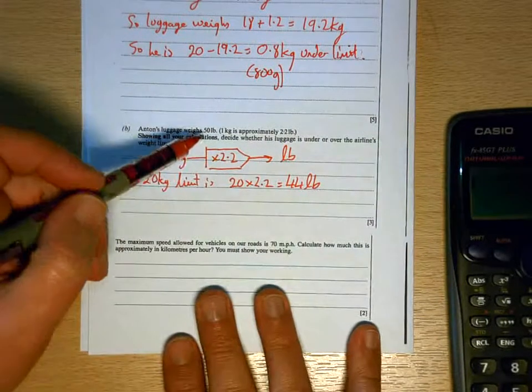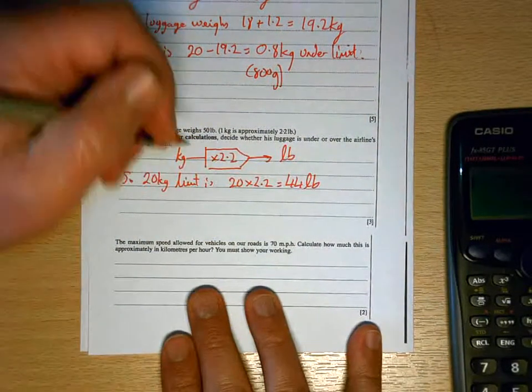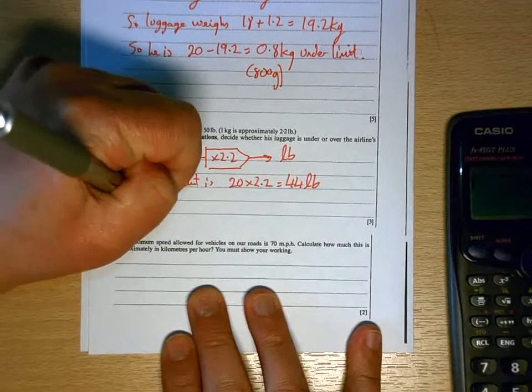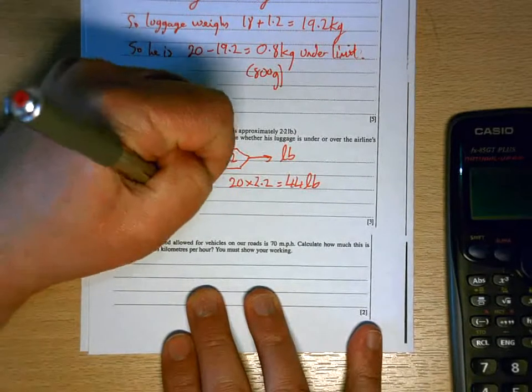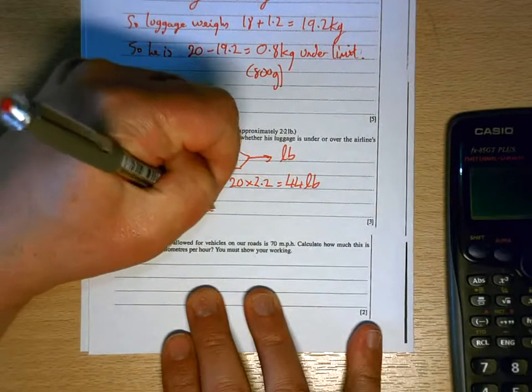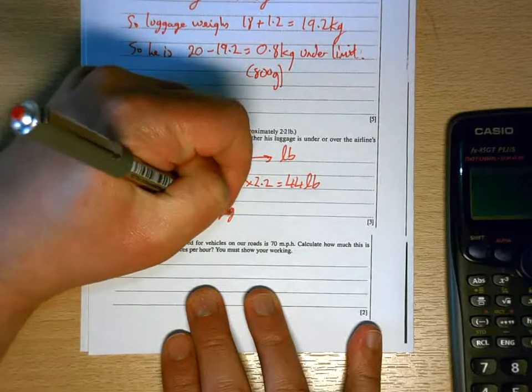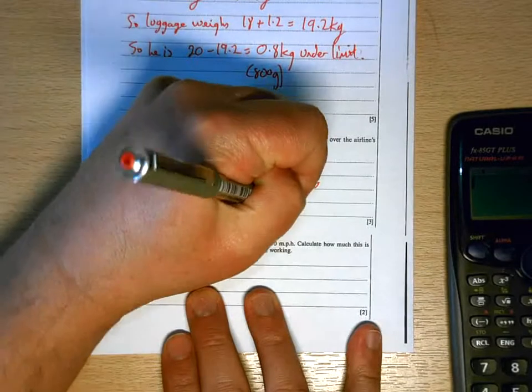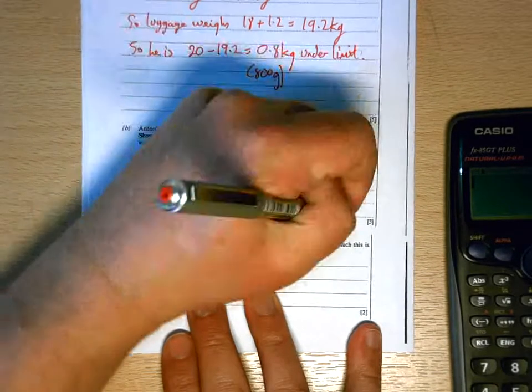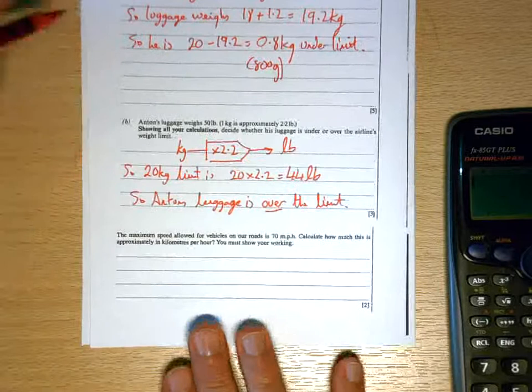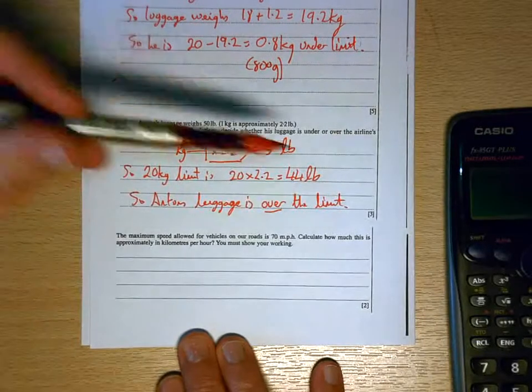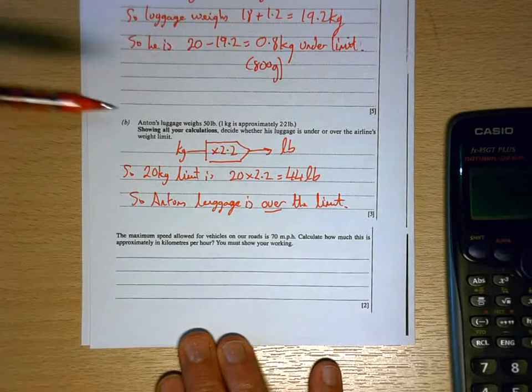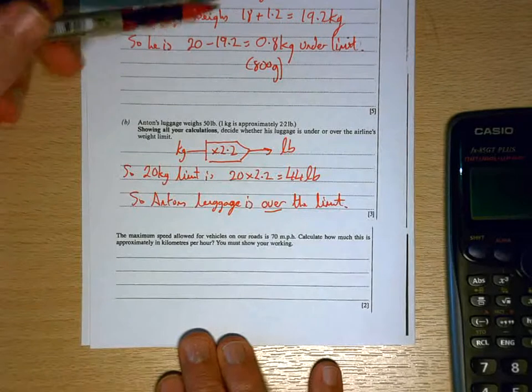So the 20 kilogram limit in imperial measure is the same as 44 pounds, so Anton's luggage weighs 50 pounds, it's over the limit.